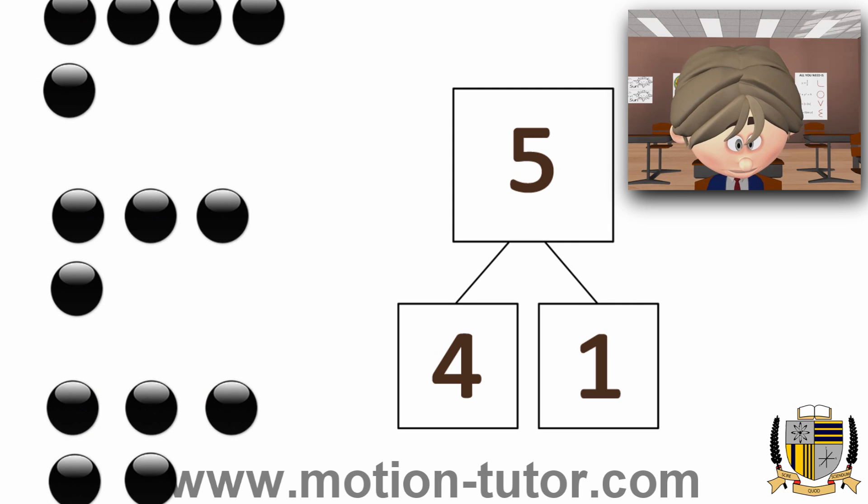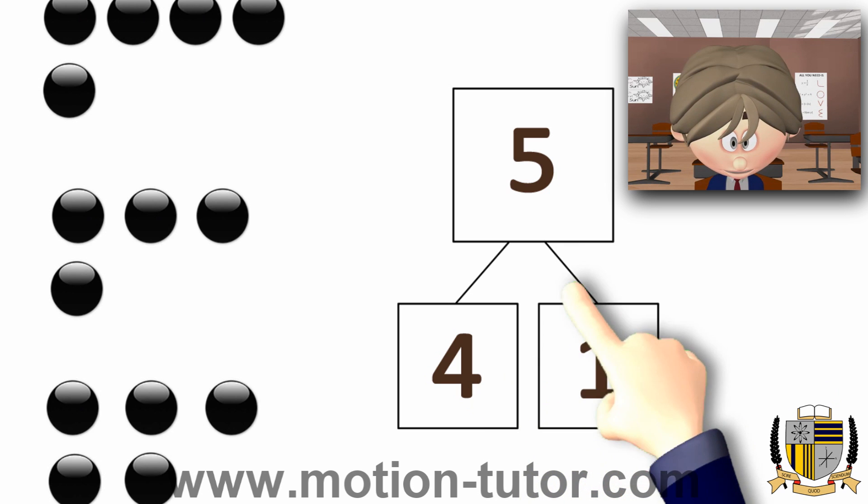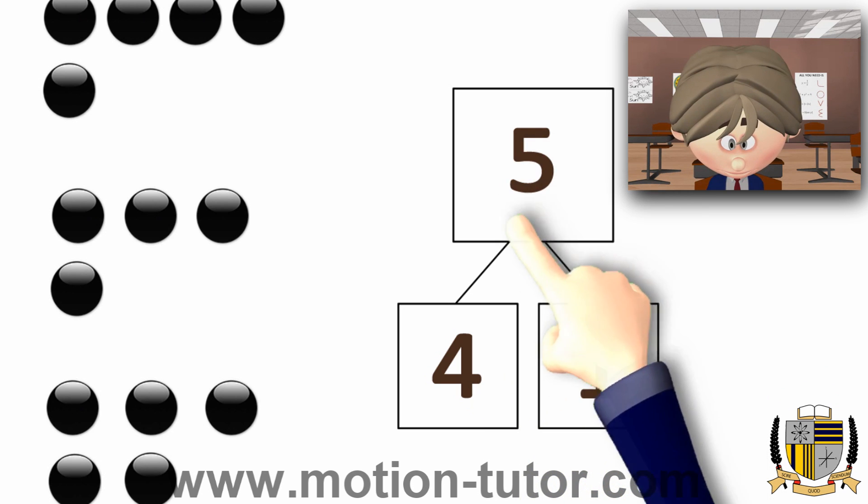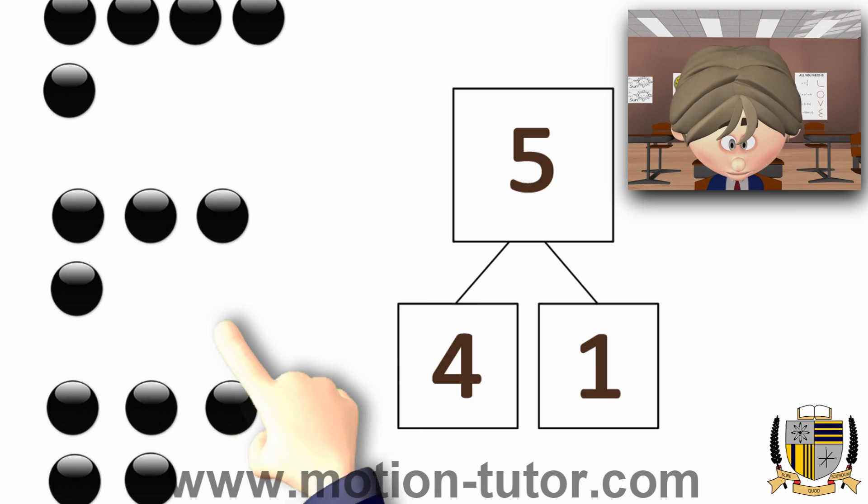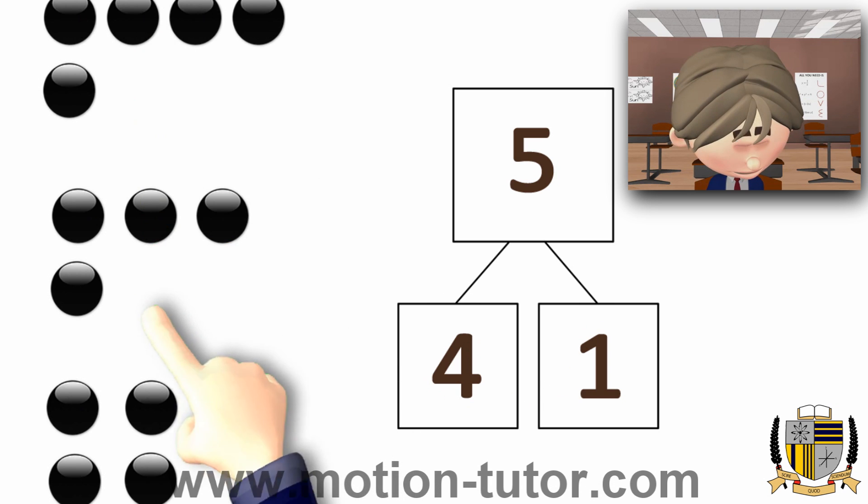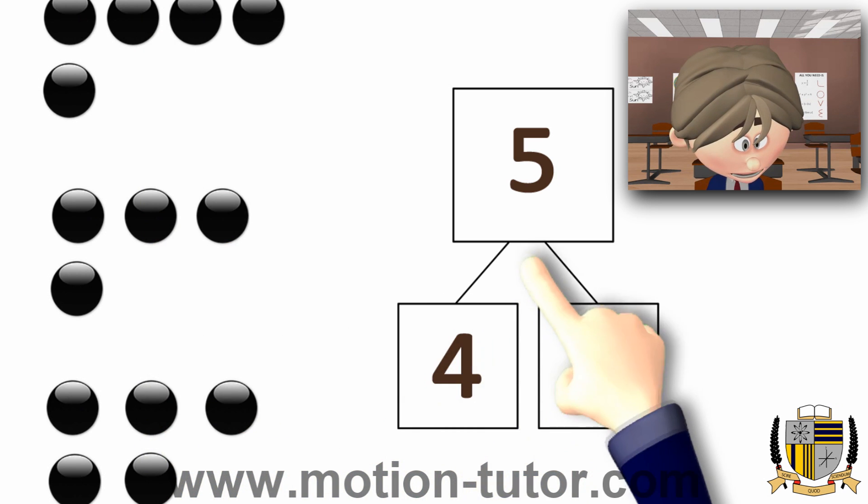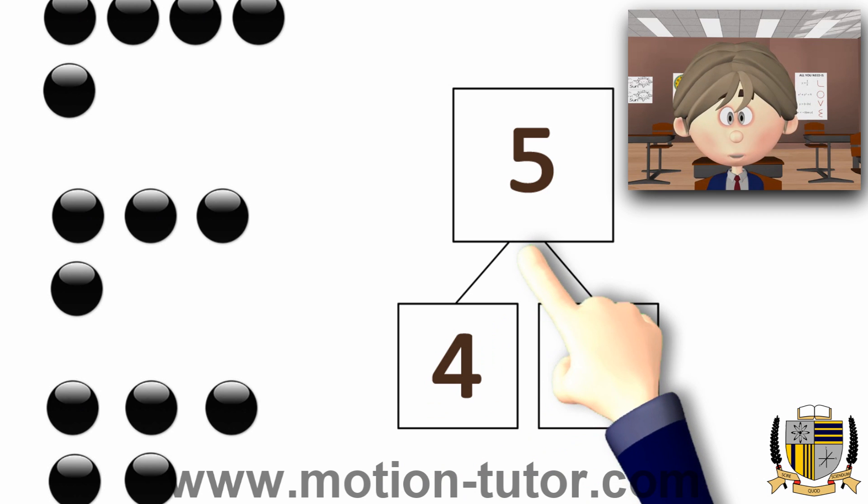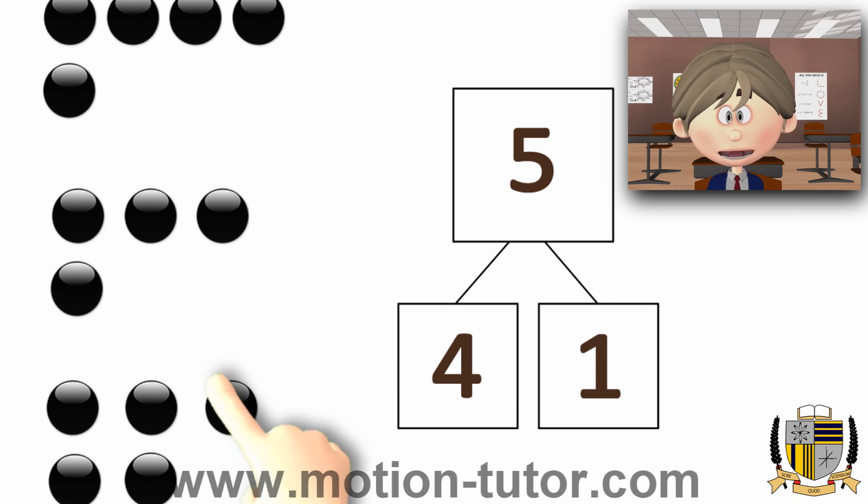Here is 5. But, we can see it's being represented as 4 and 1. So, 4 and 1 put together is this 5. Which one of these pictures illustrates, or better yet, matches this number bond?